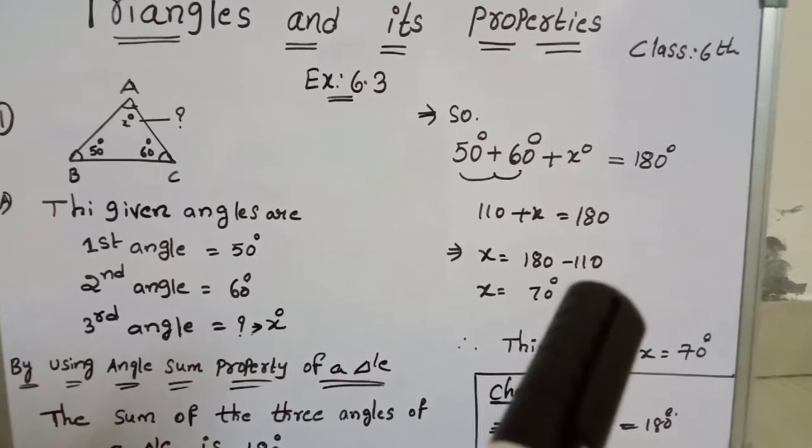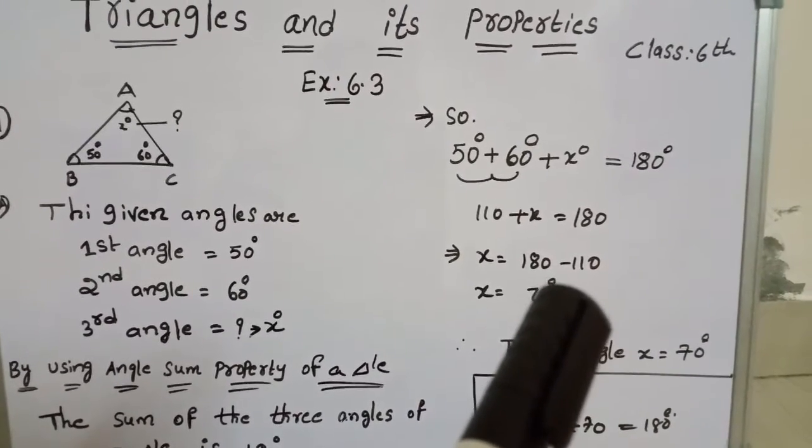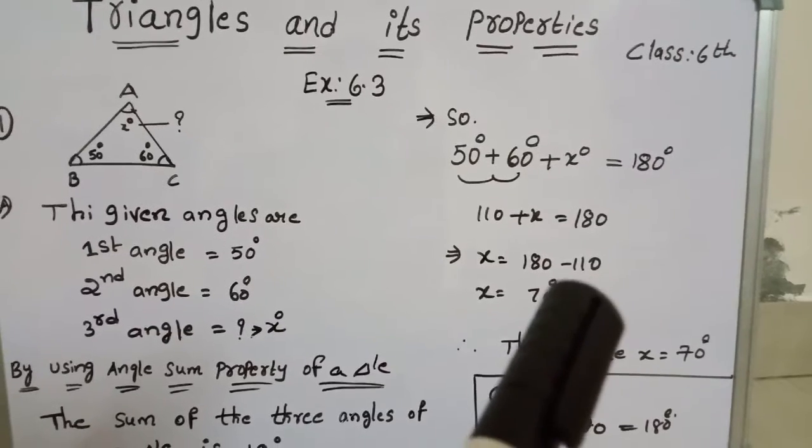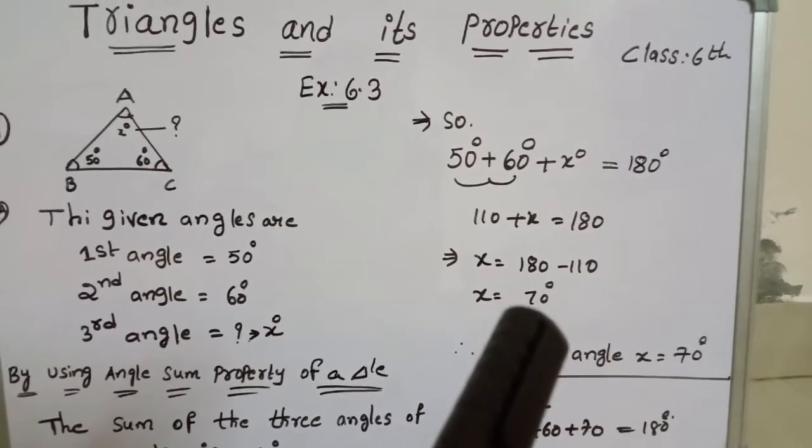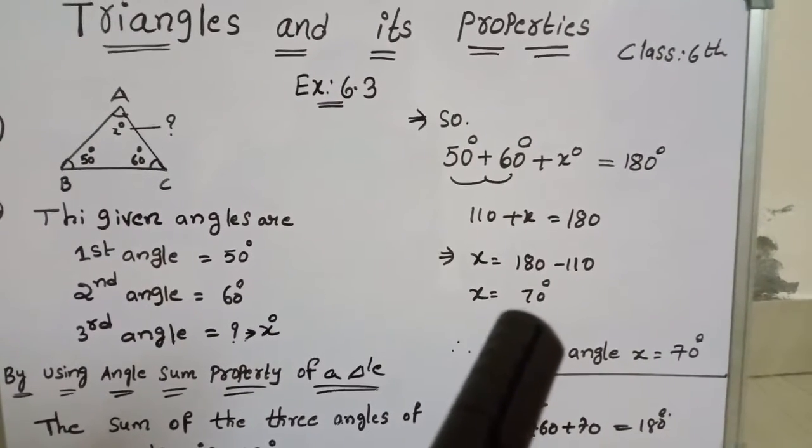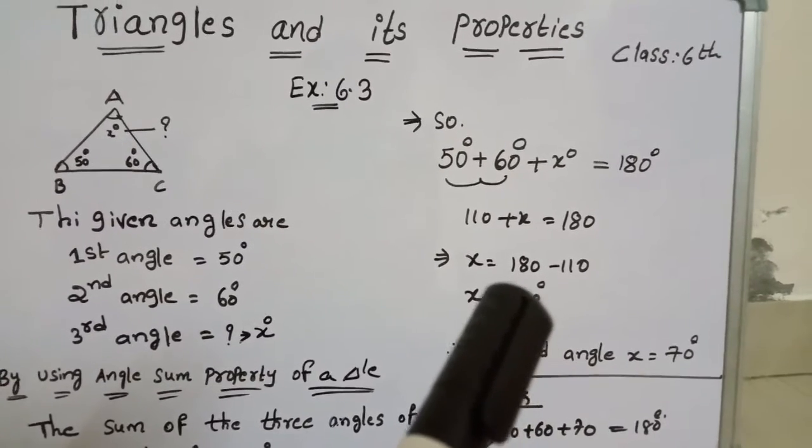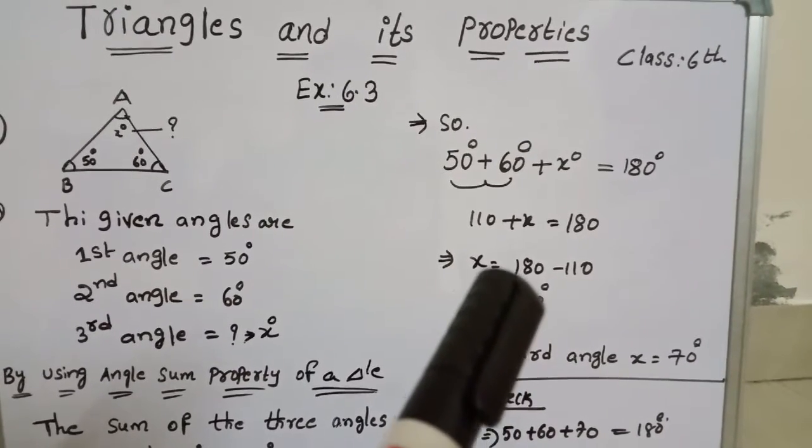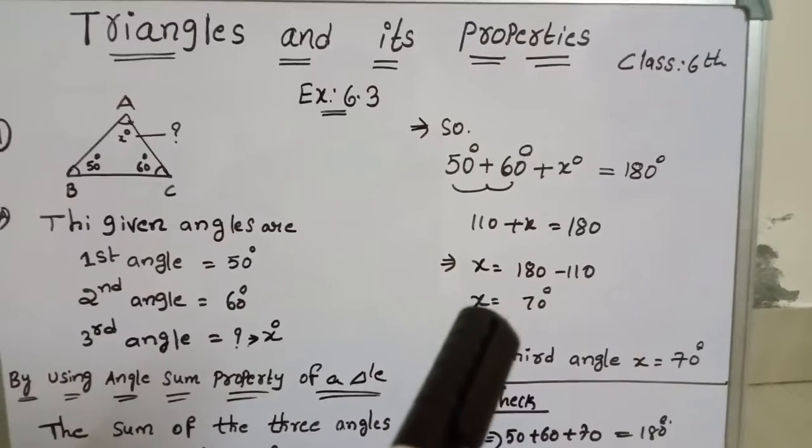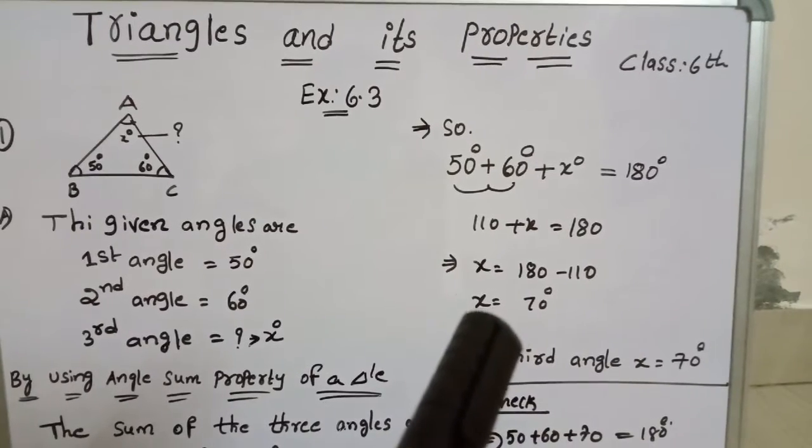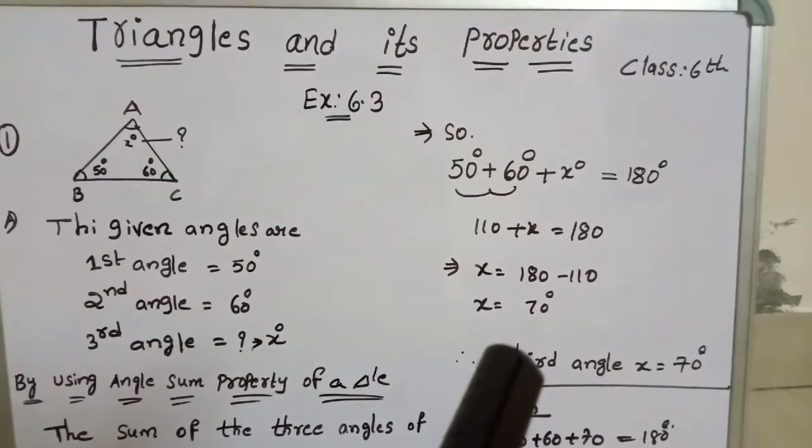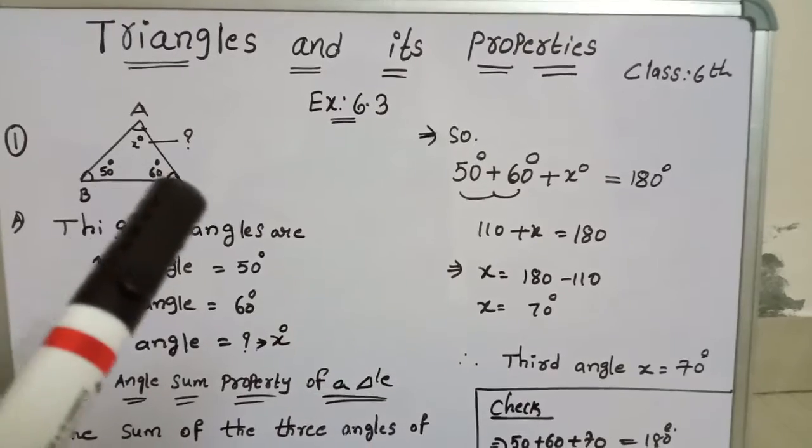Here one is positive value and one is negative value, so we should subtract. If we subtract 110 from 180 the answer is plus 70. The plus sign depends upon the biggest value of the number. 180 is the biggest value, so the symbol is positive. X equals 70 degrees, which is the third angle of the triangle.